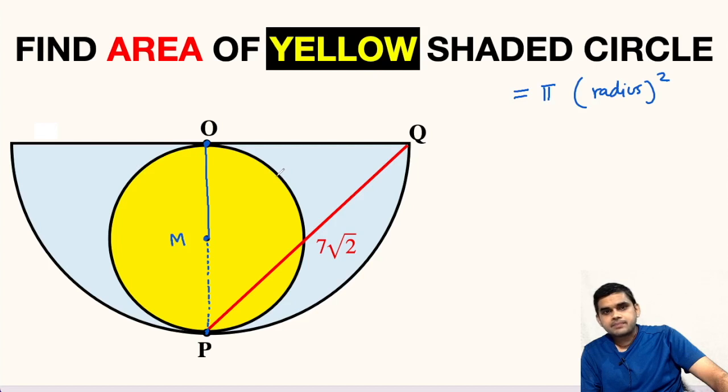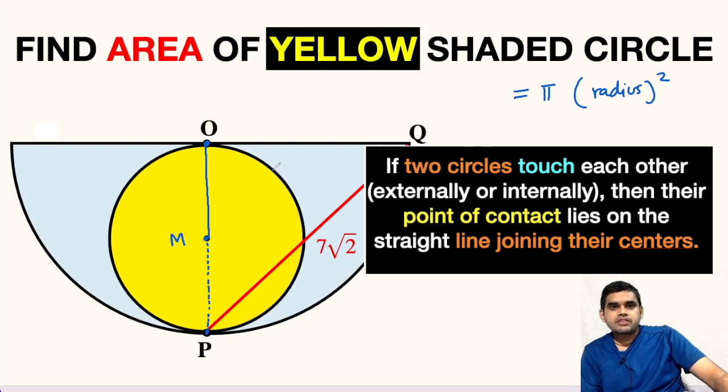Now, question comes why? Because we have a theorem that if we join the centers of two circles which are touching each other either internally or externally, then the point of contact lies on the line or the line produced. From this theorem we get that OMP will be a straight line because M is the center of this yellow circle.